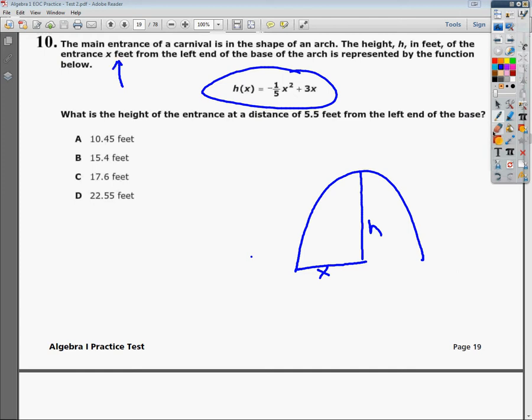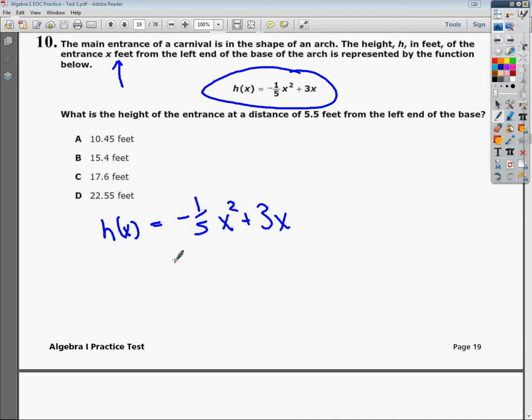Let me erase this out really quickly. I'm going to write my function down below. h of x is equal to negative one-fifth x squared plus 3x. All they want you to do is take the x and plug in 5.5.